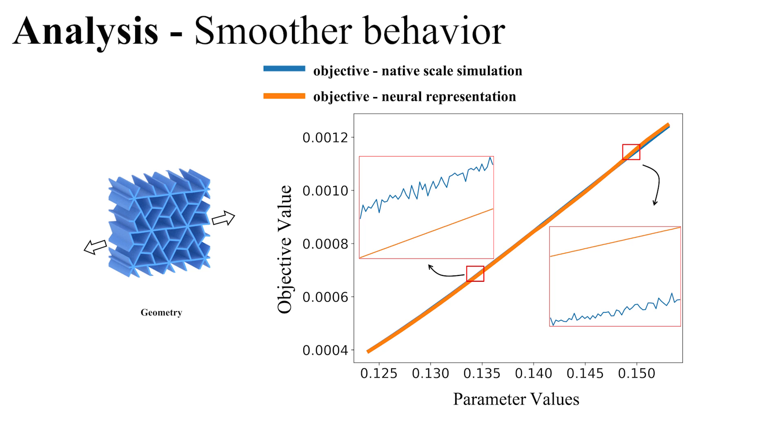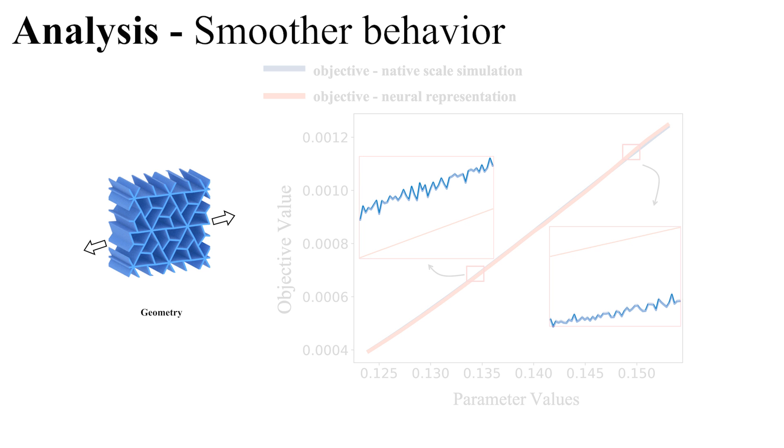We sample the objective function along a given direction in parameter space and compare results obtained through native scale simulations and our neural representation. When evaluating the design objective based on native scale simulations, the plot exhibits high-frequency oscillations around a linear trend.